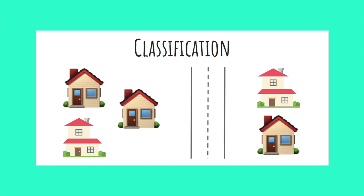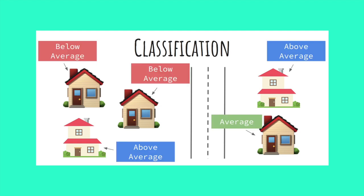But how would this same data be formulated as a classification problem? One approach would be to instead predict whether a house would be above, below, or equal to the average house value. In this case, there are no longer an infinite number of outputs — there are only three classes.